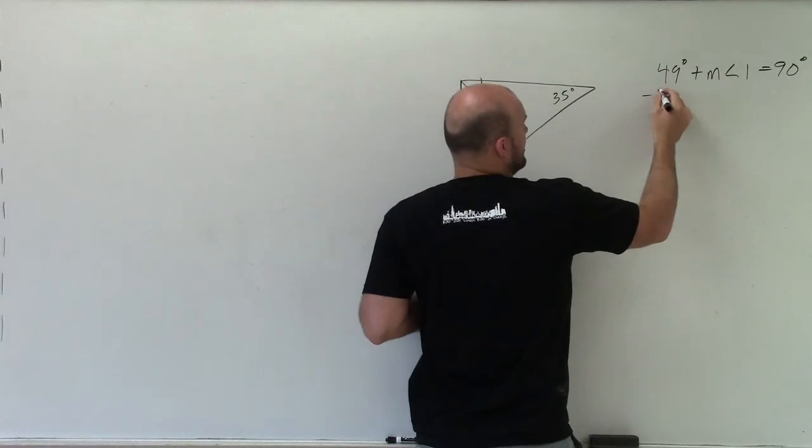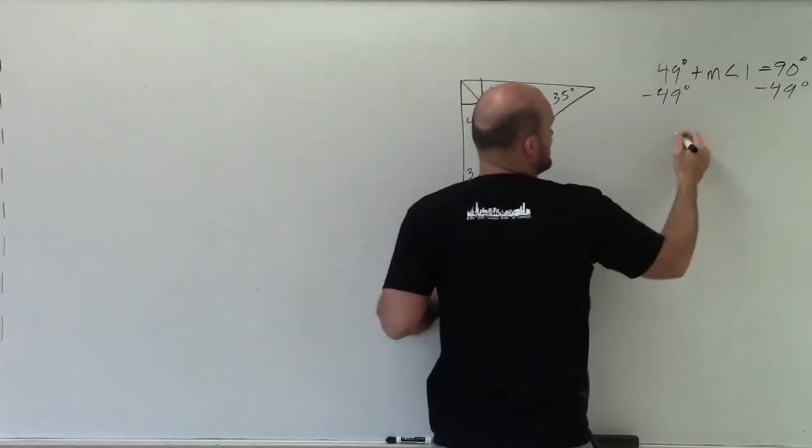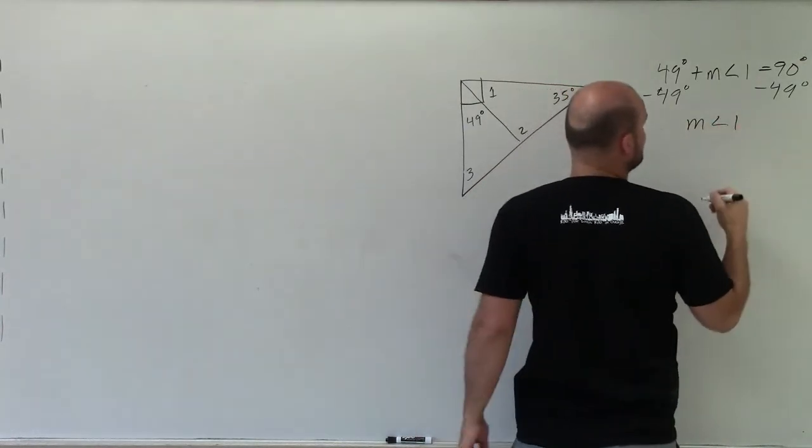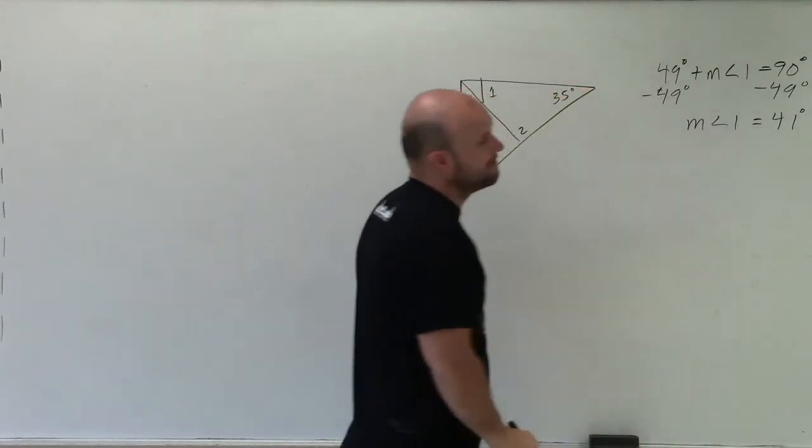So therefore to solve for measure of angle 1, I will simply just subtract 49 degrees on both sides, and I get measure of angle 1 is going to equal 41 degrees. All right?